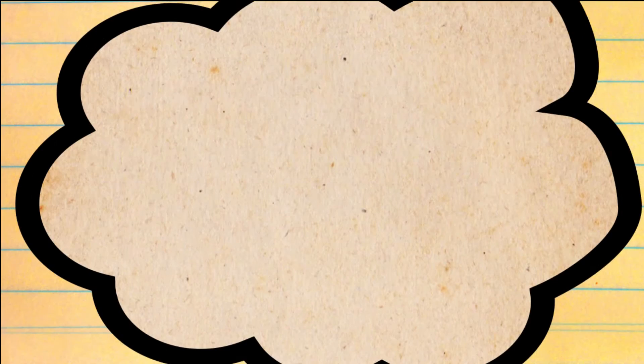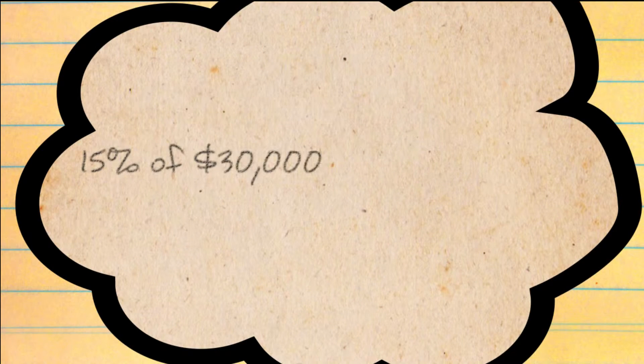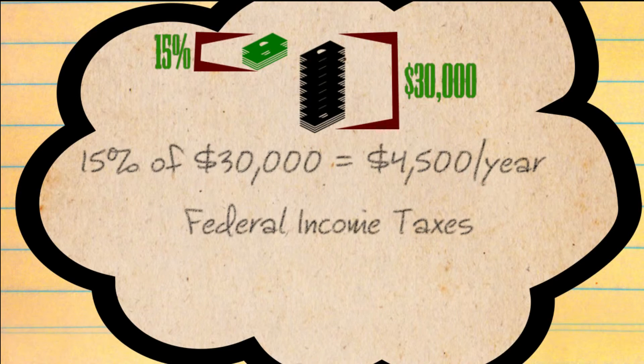John thought he was paying 15% of $30,000, or $4,500 every year in federal income taxes.